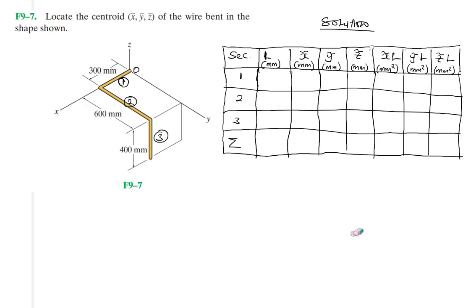Hello, I welcome you all to this another interesting screencast. We're going to be solving this engineering mechanics problem. It reads: locate centroid x̄, ȳ, z̄ over the wire — of the wire bent in the shape shown. I've drawn a table here with sections.